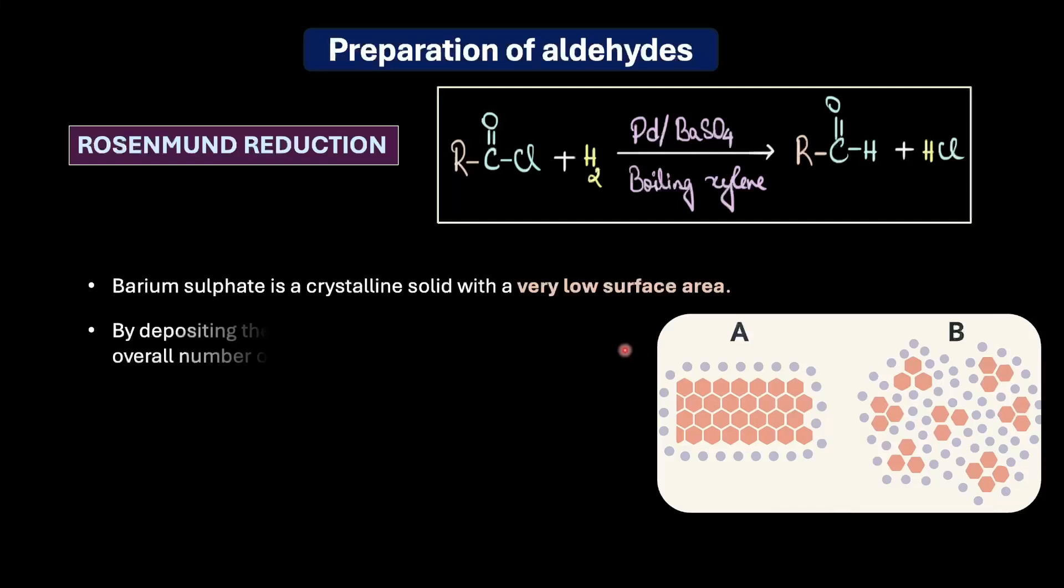That can be achieved by depositing palladium on this low surface area support like barium sulfate where the overall number of available active sites for the reaction is significantly reduced. Whereas if palladium was deposited on a high surface area support like charcoal, it would be much more active and less selective as a catalyst. This increased activity would mean that our acid chloride not only reduces to aldehyde but would further reduce to primary alcohol, which is exactly what we do not want.